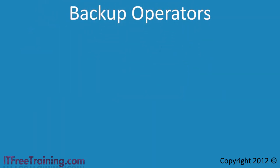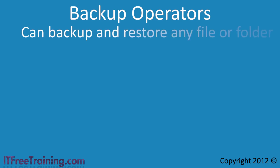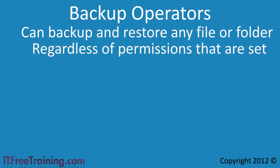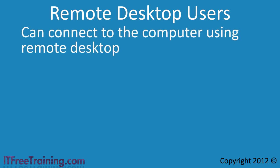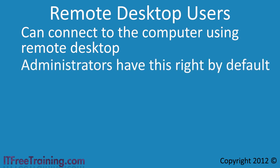The next default group is the Backup Operators group. Users in this group can backup and restore files regardless of the permissions set on the file, effectively accessing every file on the system for backup or restore purposes, but they cannot change permissions. The next group is the Remote Desktop Users group. Members of this group can access the computer using Remote Desktop, assuming it is enabled. Administrators already have Remote Desktop access by default and do not need to be added to this group, but even administrators cannot use Remote Desktop if it is not enabled and allowed through the firewall.